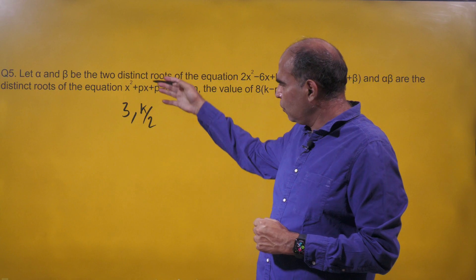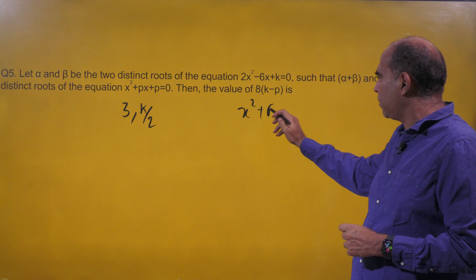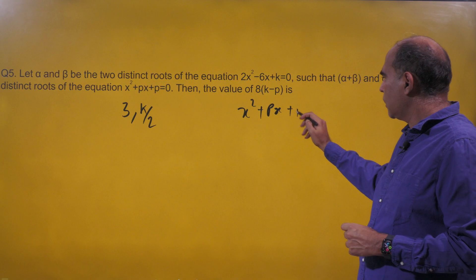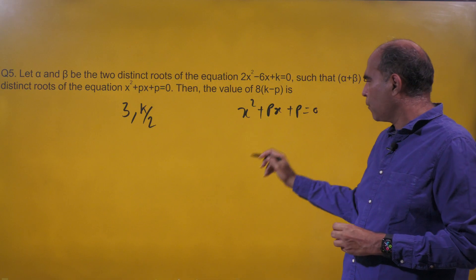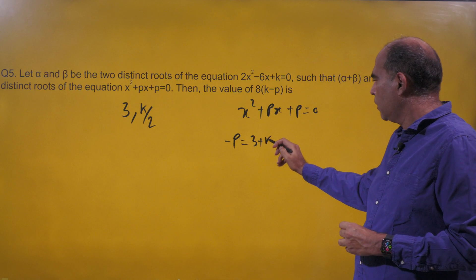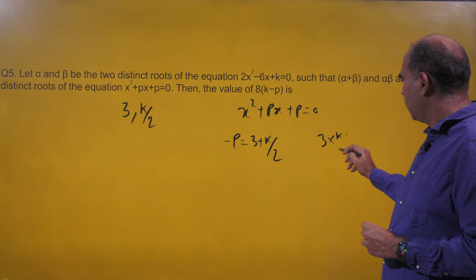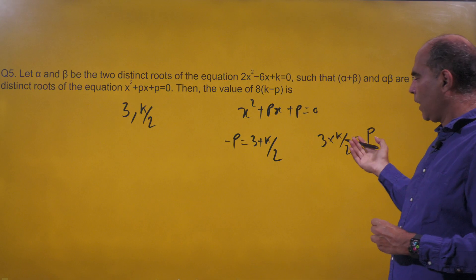I know that 3 and k/2 are the roots of this, and if the roots are 3 and k/2, I've got an equation x² + px + p = 0. So the sum of roots here is -p, which equals 3 + k/2, and the product of roots is 3 × k/2 = p.